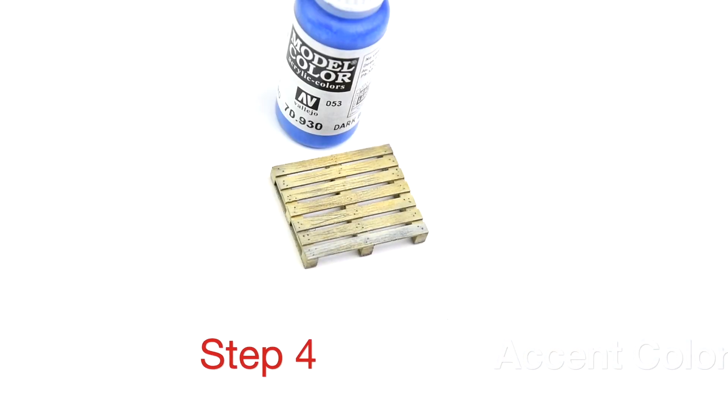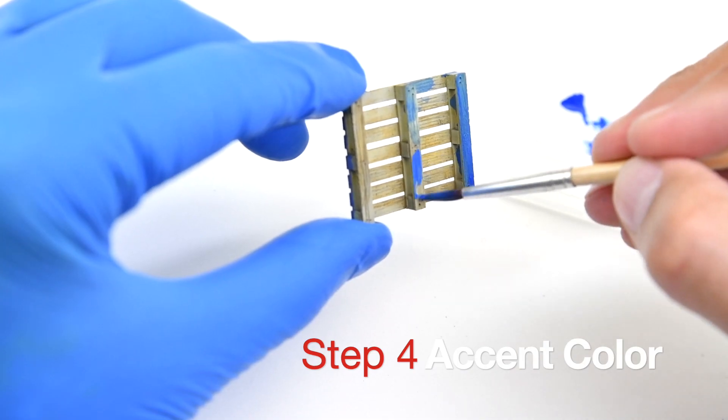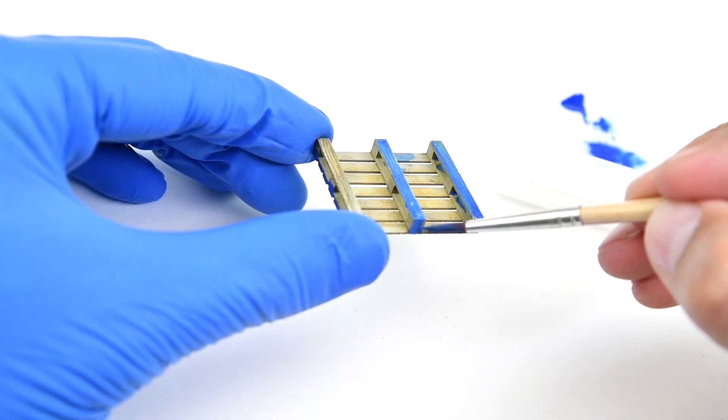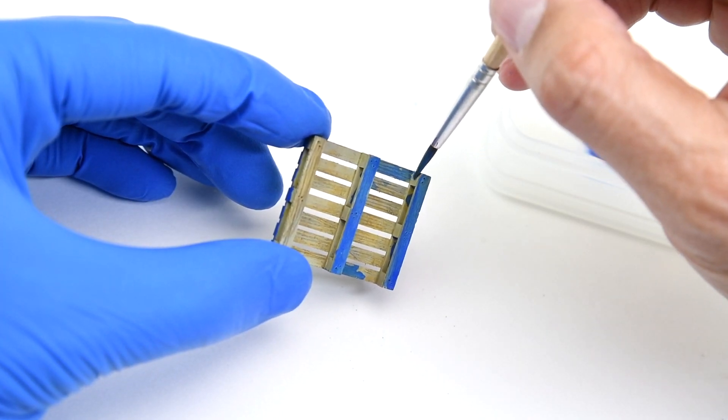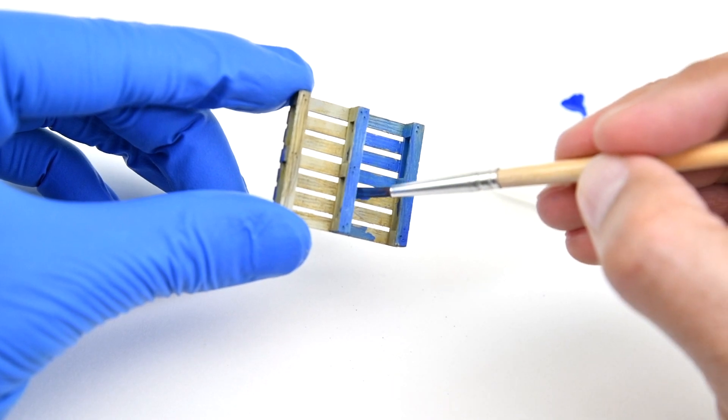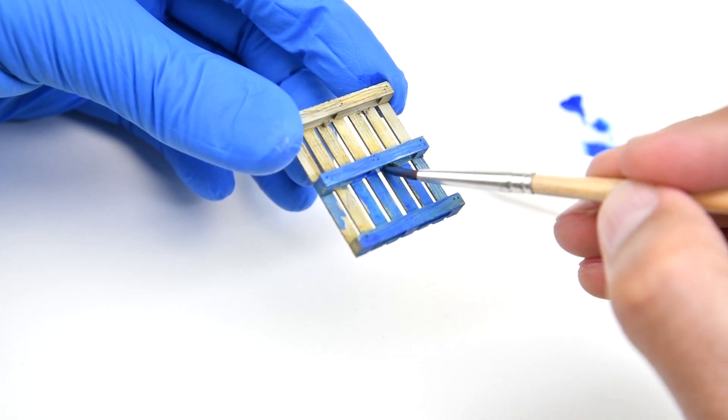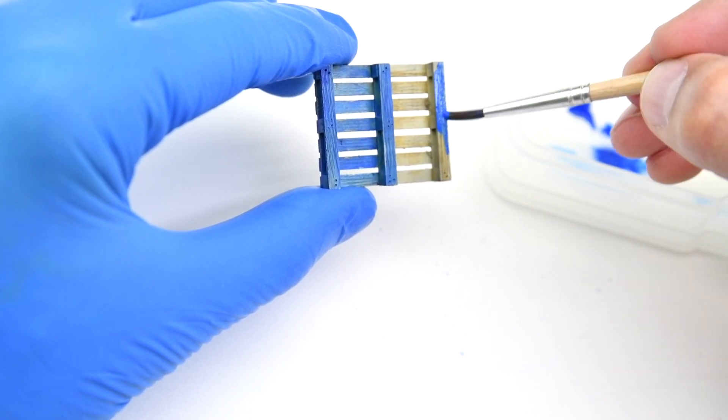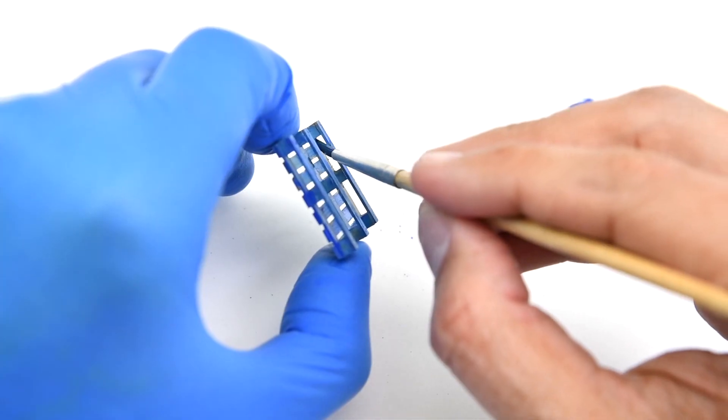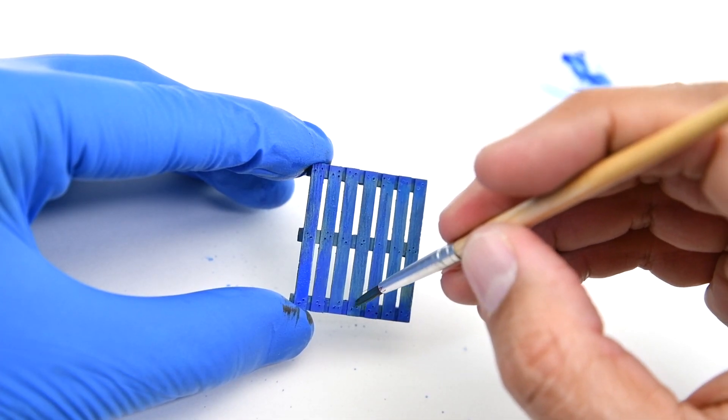This is the time you can decide to add the color you want. I recommend you to do a quick online research so you can find the color that best fits your needs. During my own search, I was able to find blue, red, yellow, and even green pallets. So pick the color or colors you want and go for it.